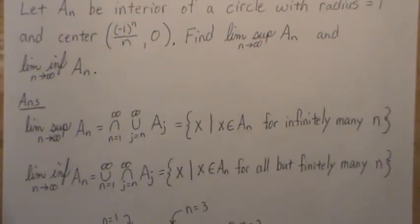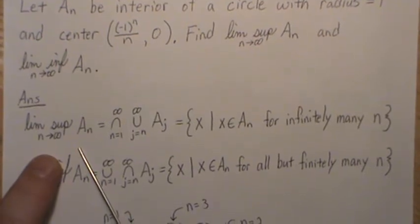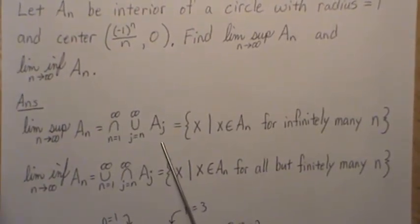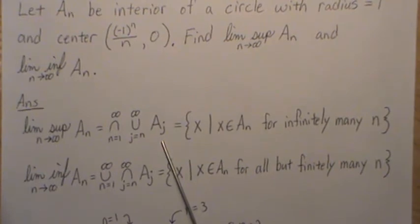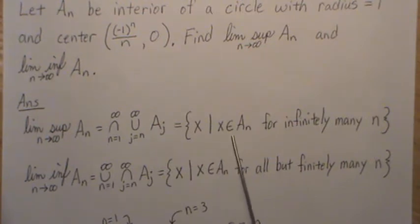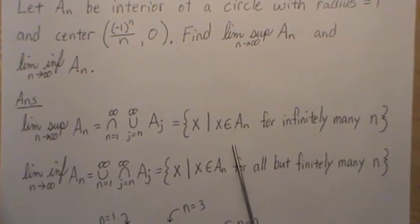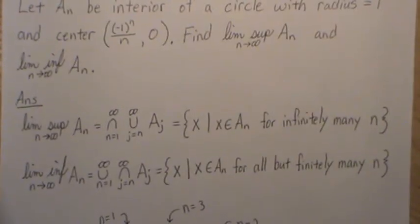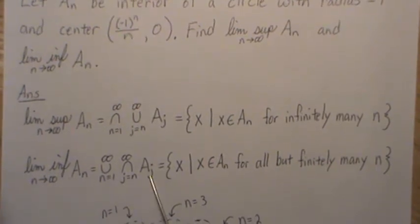I really like this example for a couple of reasons. If we look at the definition of the limit supremum of a set, it's usually defined in terms of intersections of unions of sets. The first two videos I put out on limit supremum and limit infimum primarily worked with that setting, but I also mentioned there's an equivalent definition where x is in Aₙ for infinitely many n. In this example, I actually think it's easier to think about it in that form rather than unions and intersections.